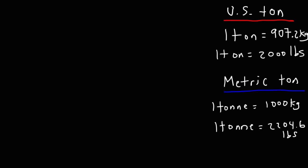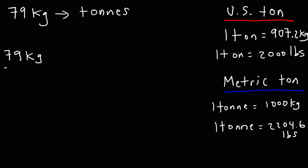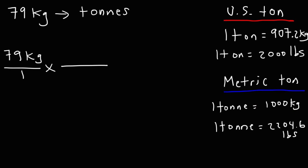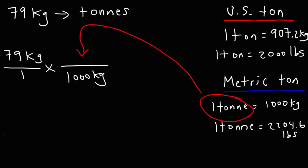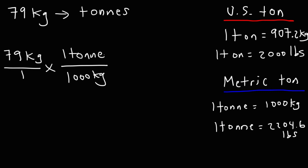Now let's try an example converting kilograms to tons. Let's say we have 79 kilograms and we want to convert that to tons. We start with what we're given — 79 kilograms over 1. Since kilograms is on top of the first fraction, we put 1,000 kilograms on the bottom of the second fraction and 1 ton on top. The unit kilograms cancel, and this time 1,000 is on the bottom, so we divide: 79 divided by 1,000 equals 0.079 tons.